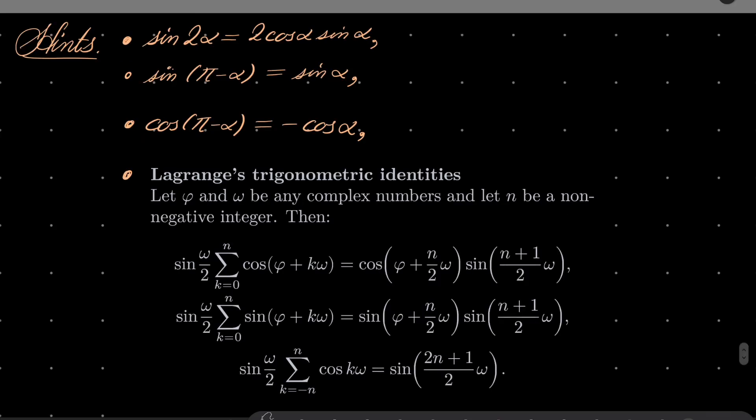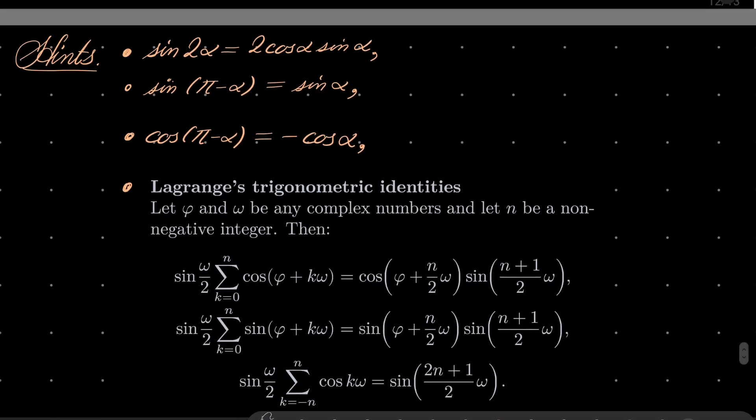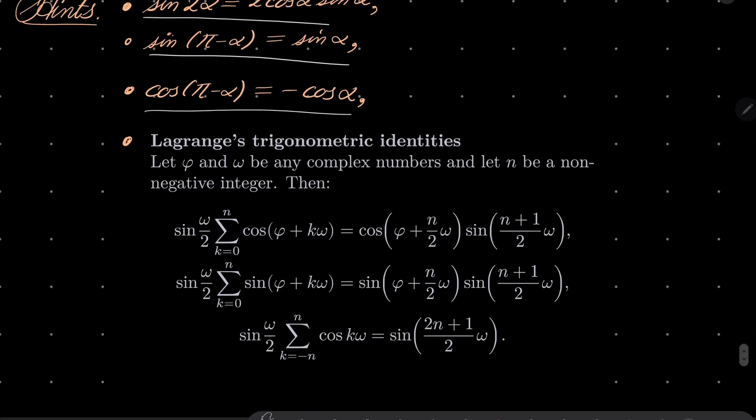It's all about the following three trigonometric identities. First one, sine of 2 times alpha is 2 times cosine of alpha sine of alpha which will be useful later. Sine of pi minus alpha is sine of alpha that also will be useful later. Cosine of pi minus alpha equals minus cosine of alpha and the following three identities.